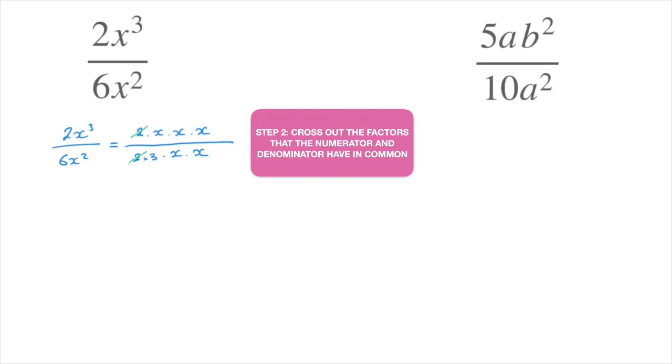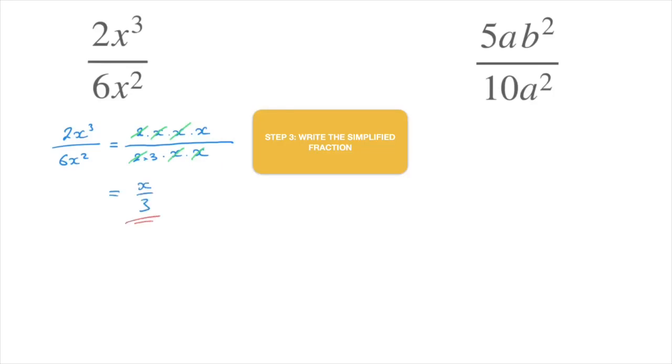so I'll cross those out. I have an x at the top and the bottom, so I cross those out. I have another x at the top and another x at the bottom. And that's all that they have in common. The simplified fraction is obtained by writing whatever is left. In other words, this is equal to x over 3. And that's the final answer.